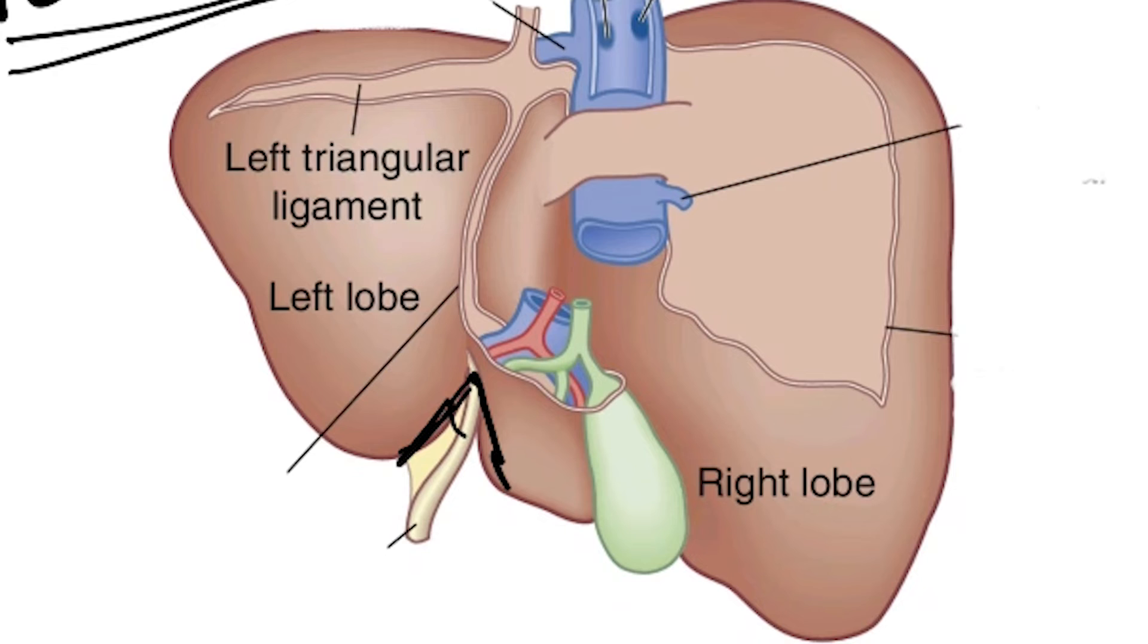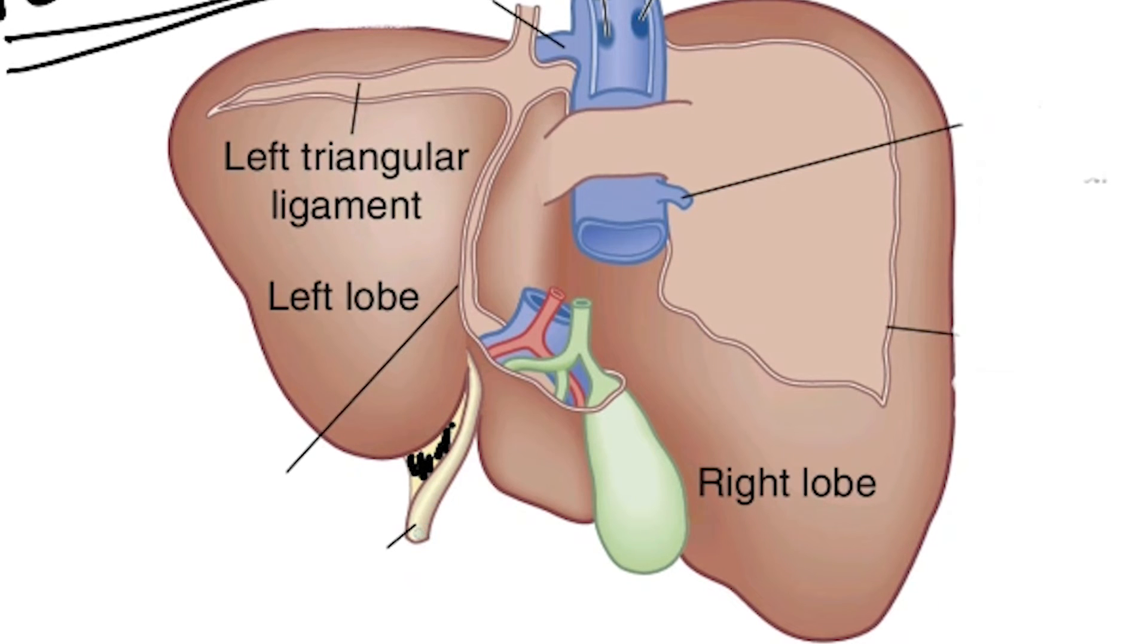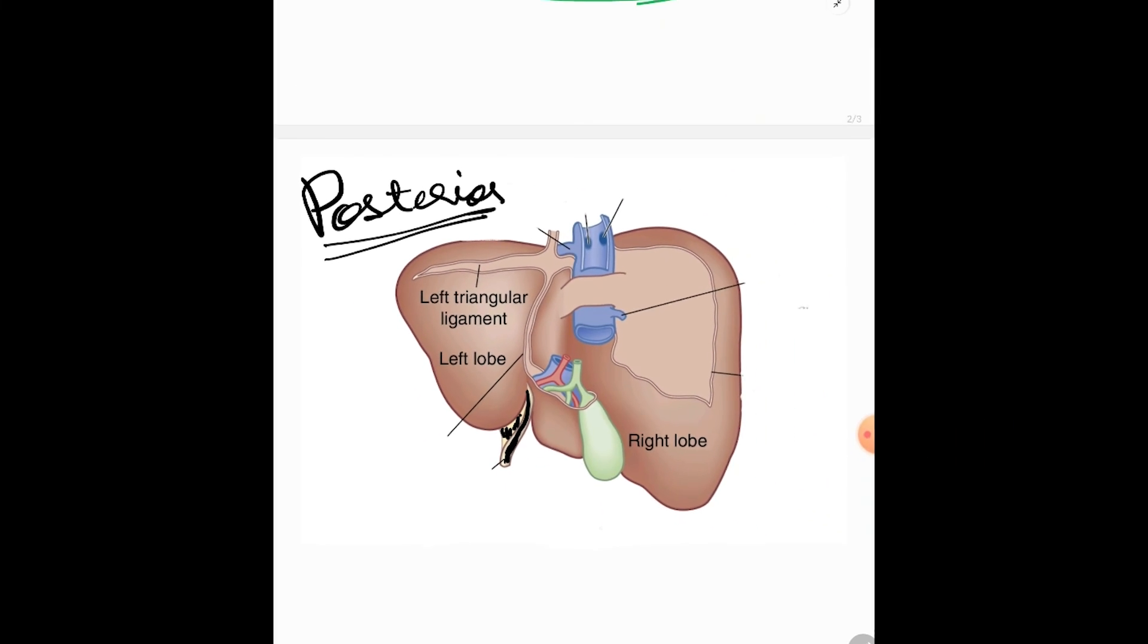So, over on that notch, you can see the falciform ligament coming from the anterior side and in the lower free border, you can see the thick band called the ligamentum teres hepatis.